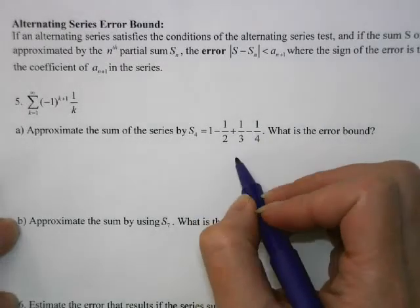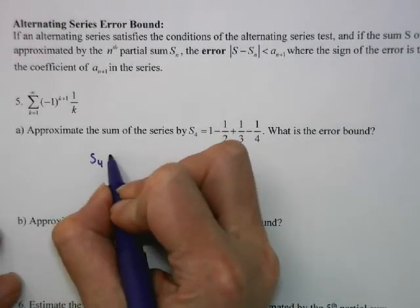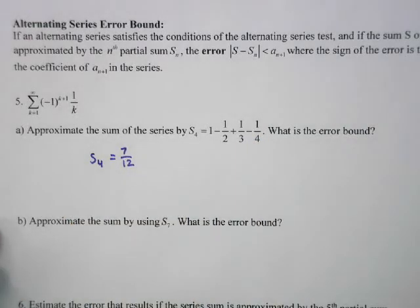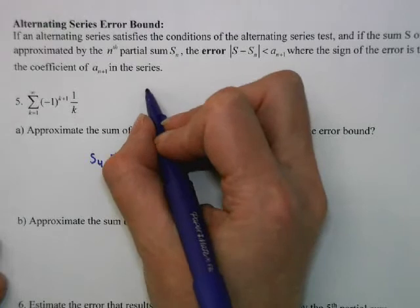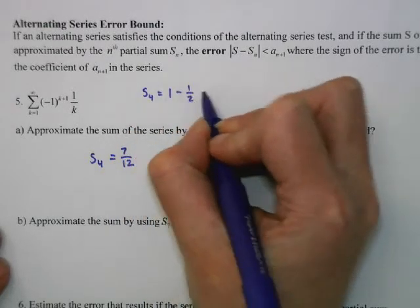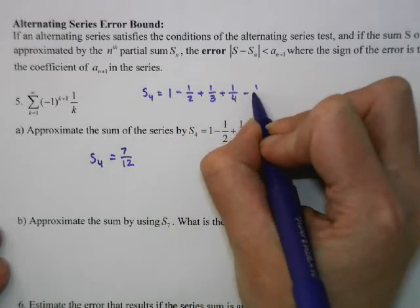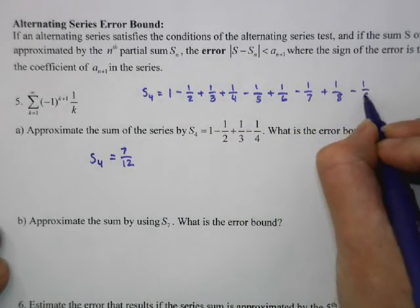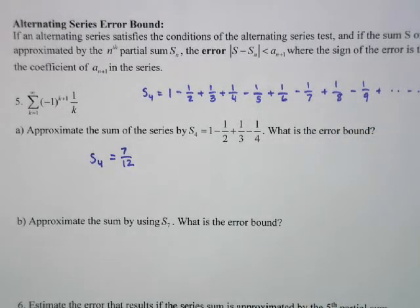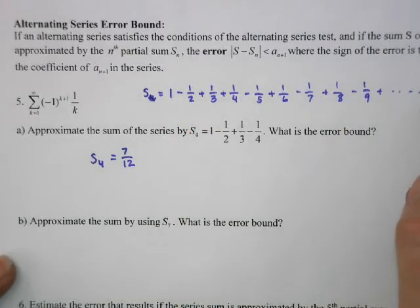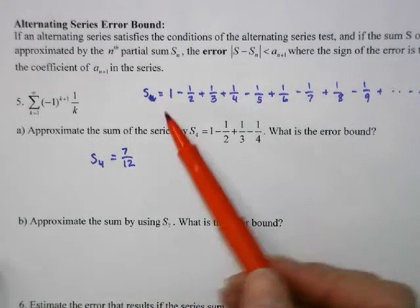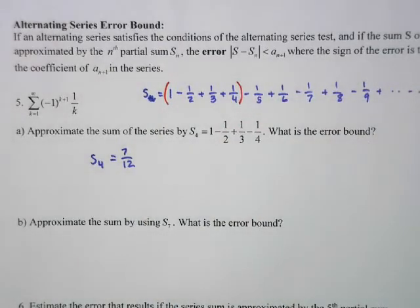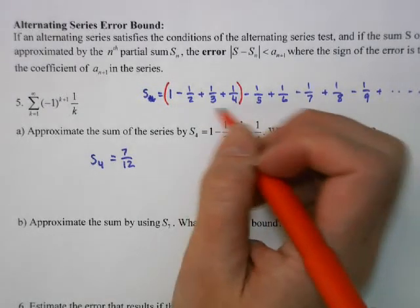We'll illustrate this with the alternating harmonic series, approximating with partial sums. If we add 1 − 1/2 + 1/3 − 1/4, you get 7/12. Writing out more terms: minus 1/5 plus 1/6 minus 1/7 plus 1/8, and so on. The sum is this infinite series; it's difficult to add infinitely many things, so we approximate by adding some terms. We said S₄ = 7/12, but it's not exact — it's an approximation.